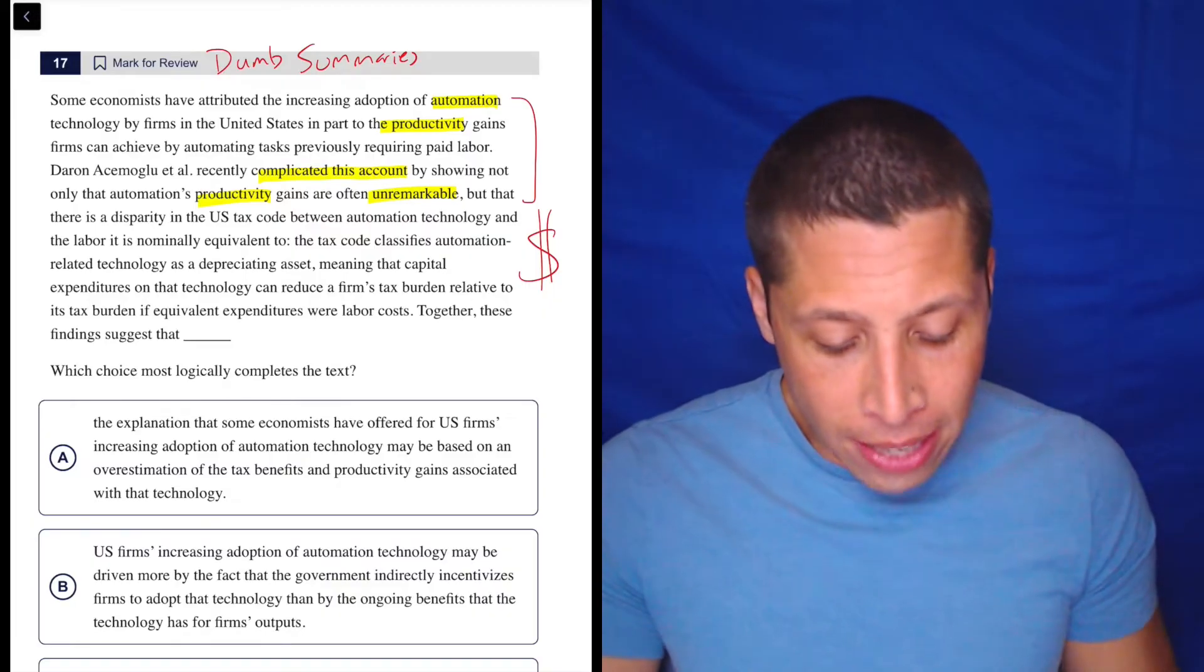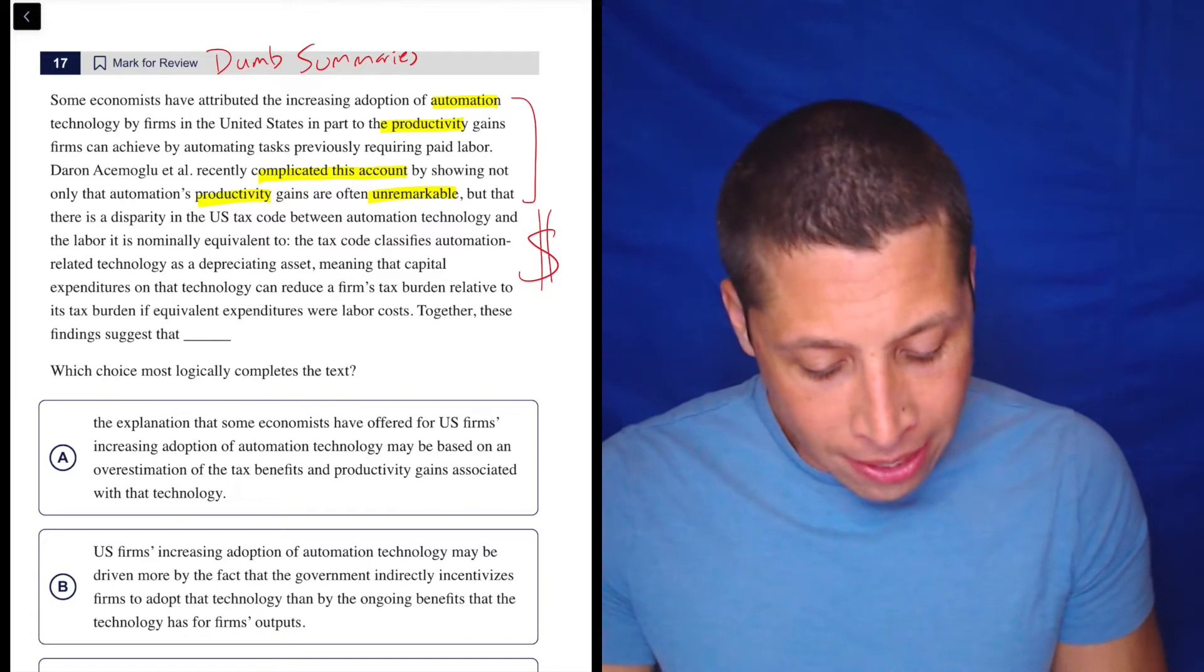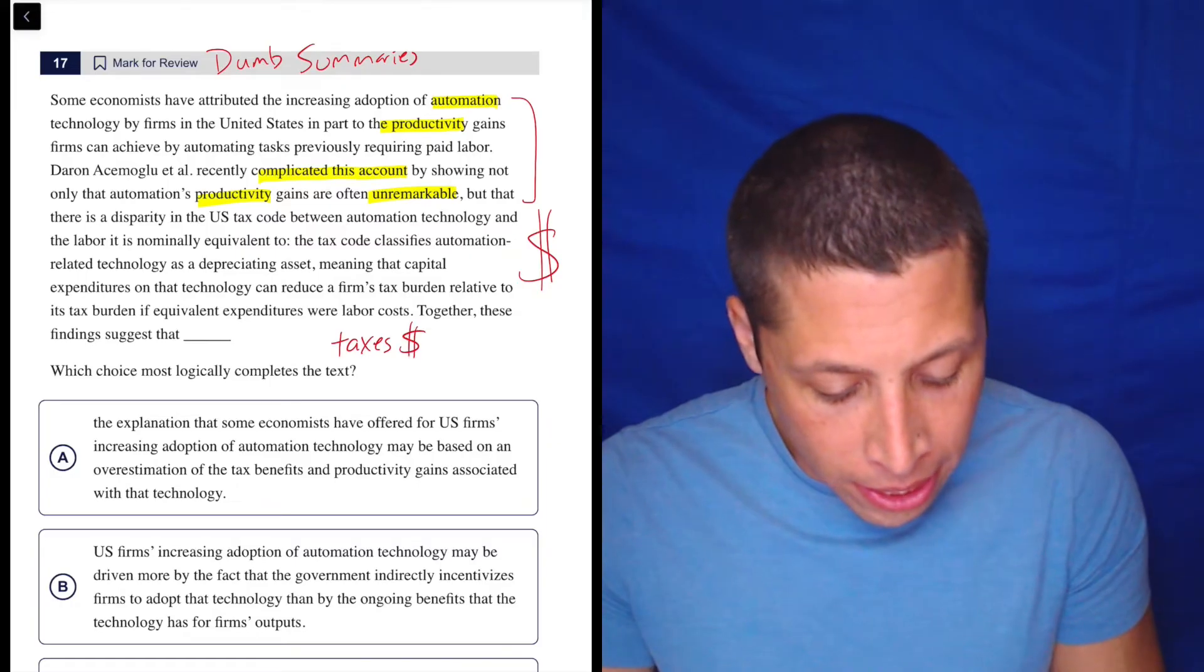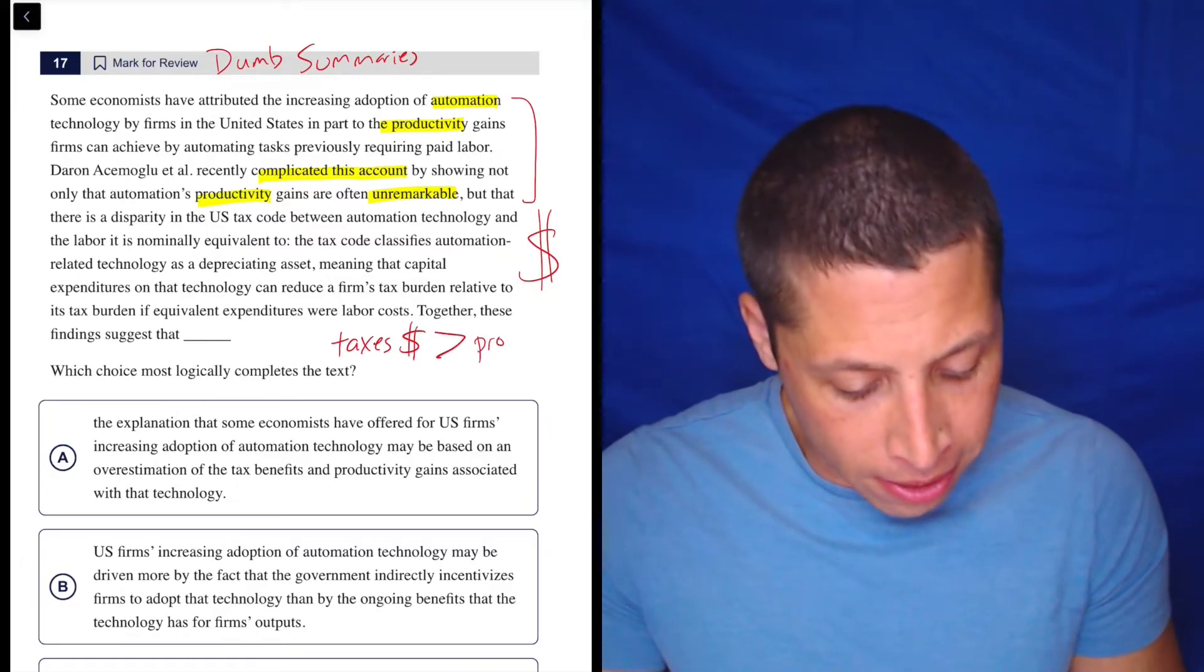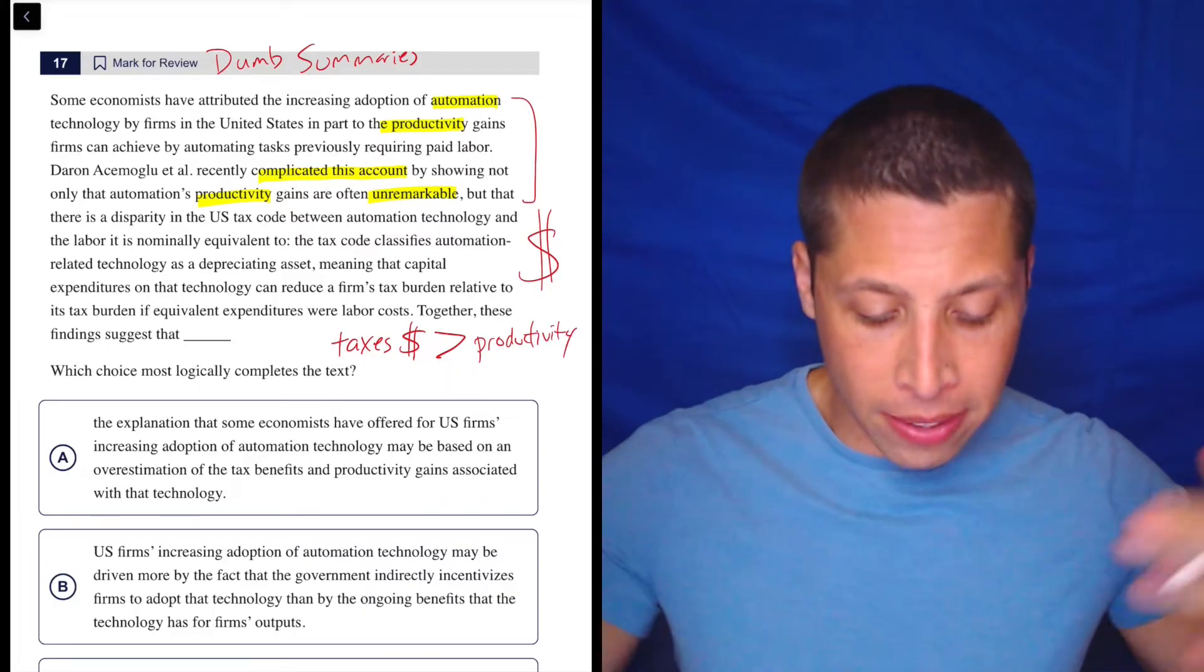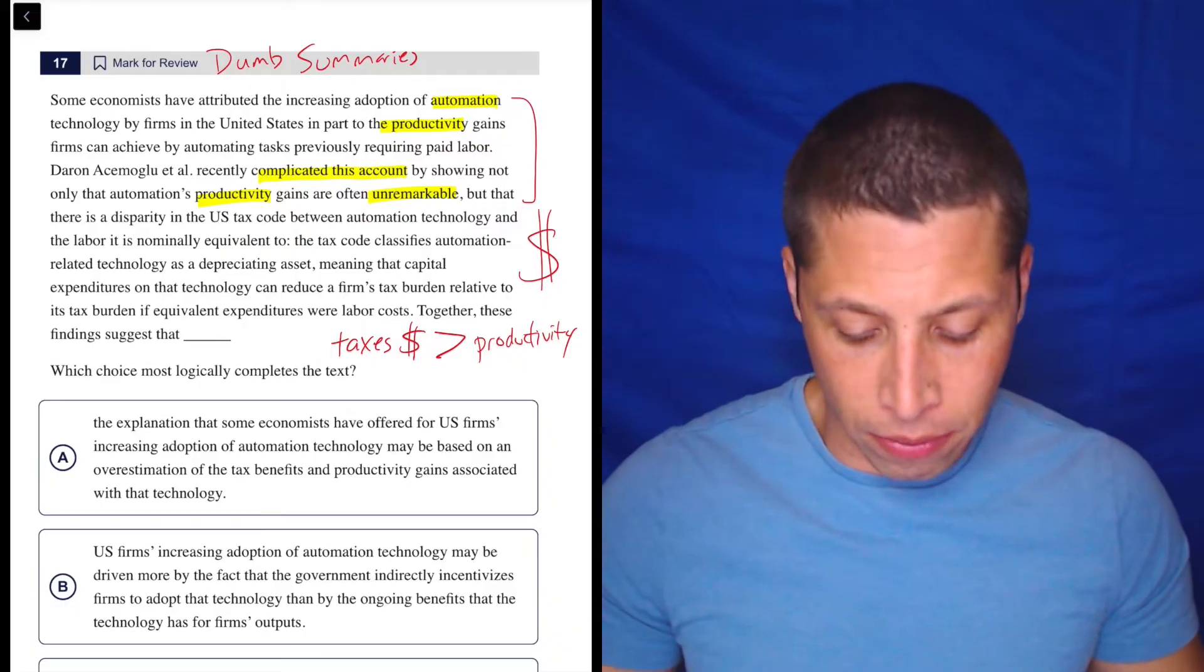So my guess for what's going on here is that they're going to say that taxes or money, so taxes, money, is more important than productivity. Where am I getting that? Well, they started out by saying productivity is important, right?